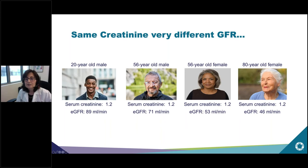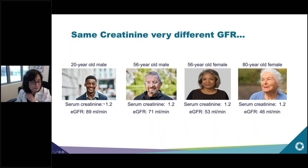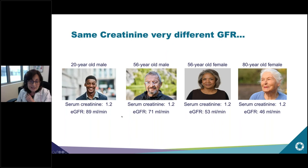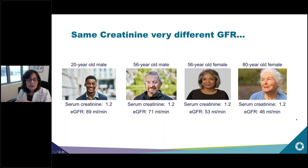One creatinine value can mean very different glomerular filtration rates. For example, a 20-year-old male with creatinine 1.2 has an estimated GFR of 89 using the newest equations. A 56-year-old male with the exact same creatinine has an estimated GFR of 71, because creatinine falls with age. A 56-year-old female with the same creatinine has an even lower estimated GFR. And an 80-year-old female with the same creatinine has an even lower eGFR still.